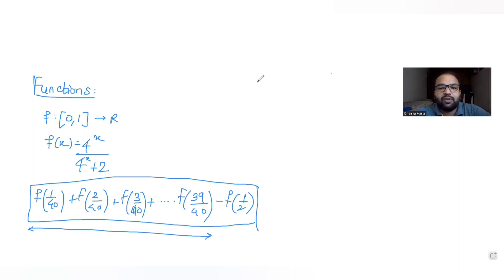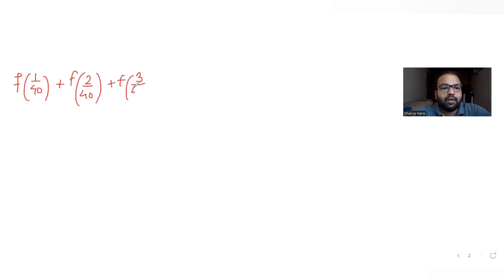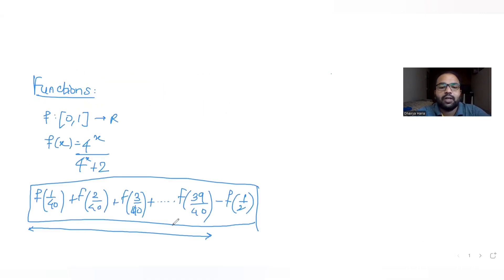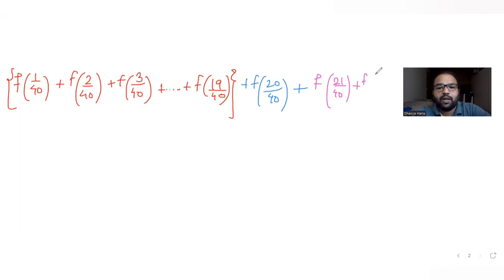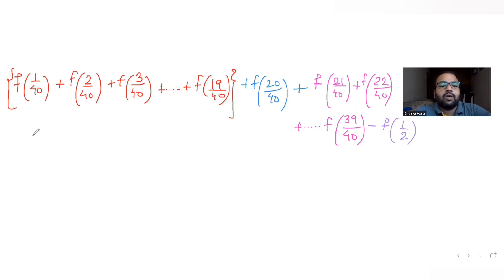I can split the 39 terms into three parts: the first 19 terms from f(1/40) to f(19/40), then the 20th term f(20/40), and the remaining 19 terms from f(21/40) to f(39/40). After that we have the remaining part, minus f(1/2).